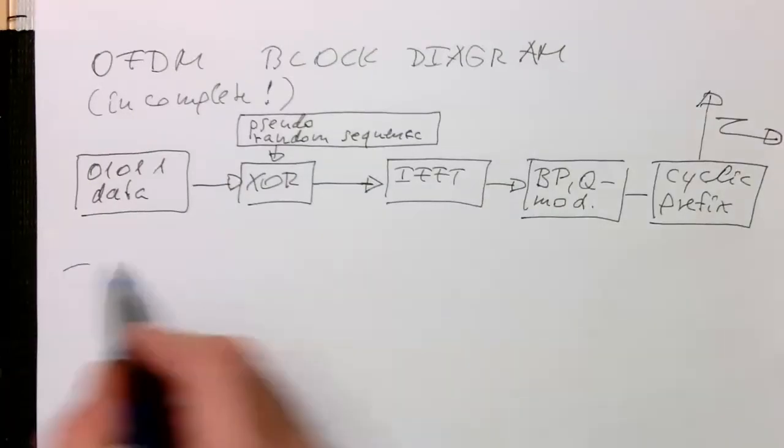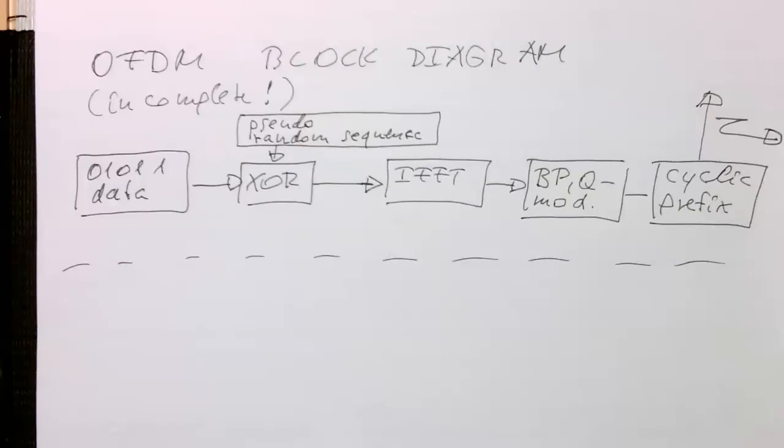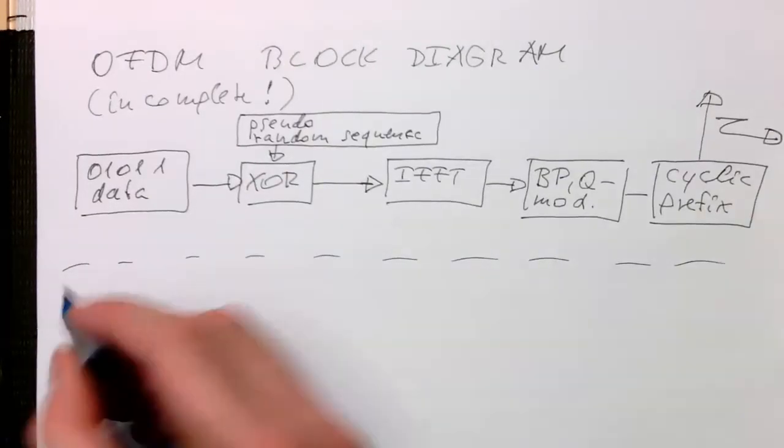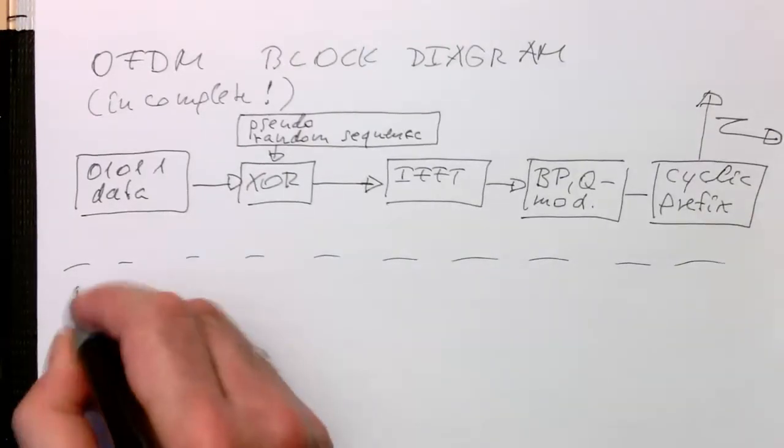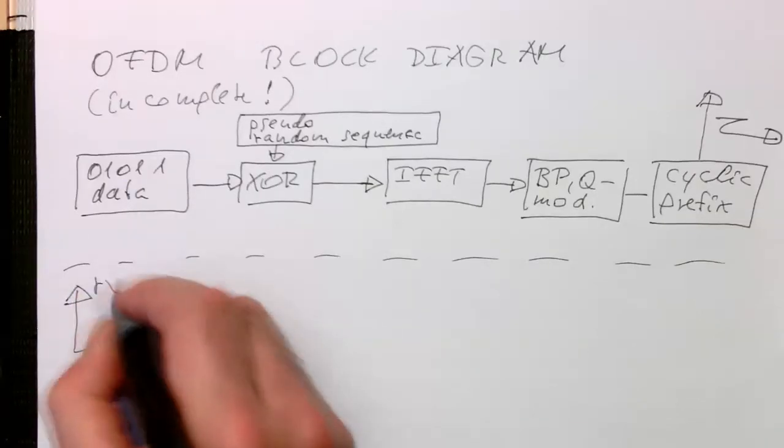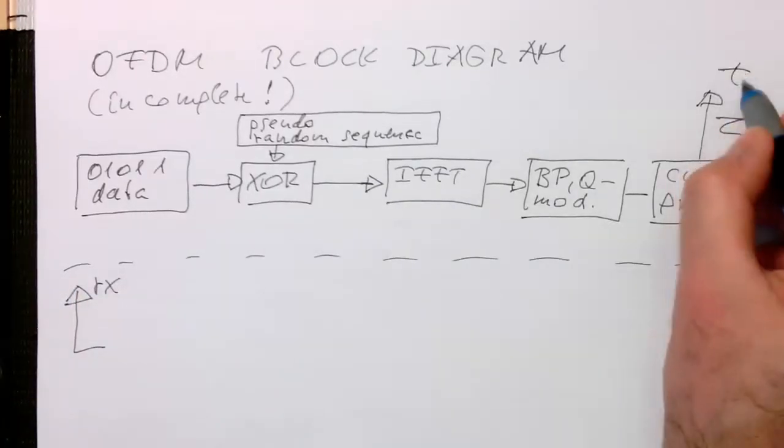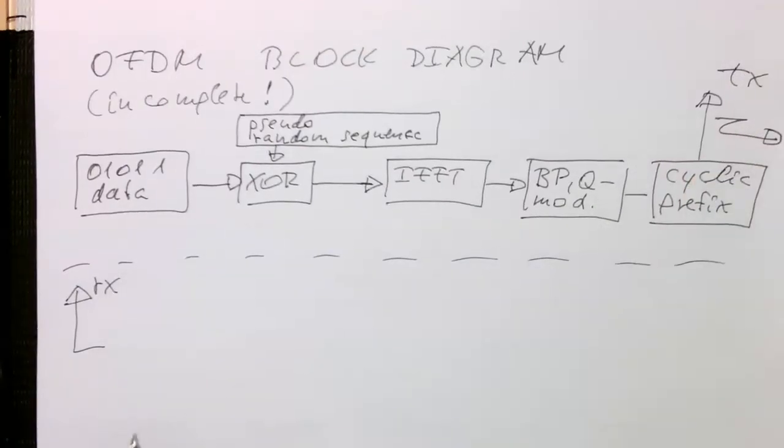Now let's add our receiver here. The receiver is our aerial here. That's our received signal here, and that's our transmitted signal here, Rx.